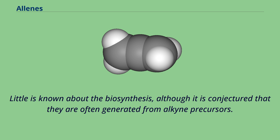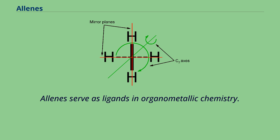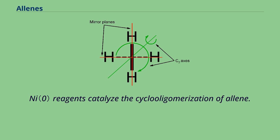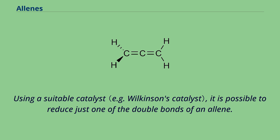Allenes serve as ligands in organometallic chemistry. A typical complex is Pt(η2-allene)(PPh3)2. Nickel reagents catalyze the cyclo-oligomerization of allenes. Using a suitable catalyst, it is possible to reduce just one of the double bonds of an allene.